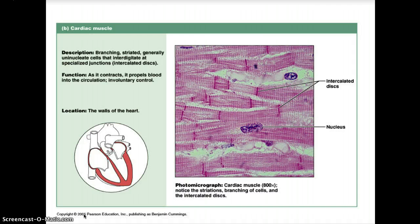Cardiac muscle combines features of both smooth muscle and skeletal muscle: like skeletal muscle it has striations, but the contraction of the heart is involuntary — we don't need to think about this muscle contracting; it just happens on its own, although relaxation therapy does enable some people to consciously slow the heart. The contractions of cardiac muscle are inherent and rhythmical, producing that 'lub-dub' sound, and are modified by the nervous system.